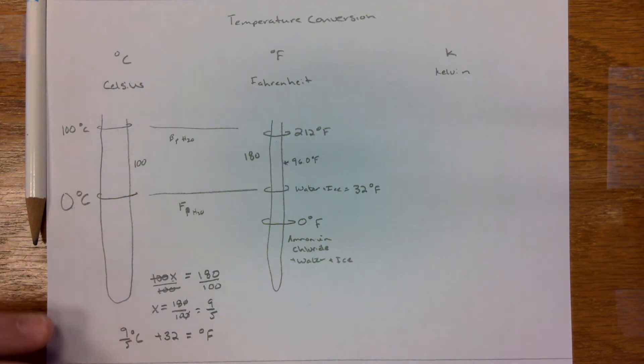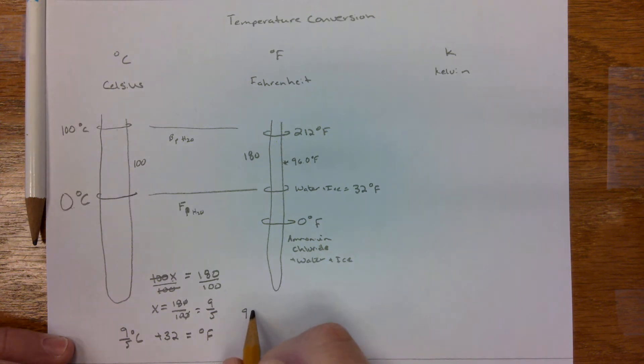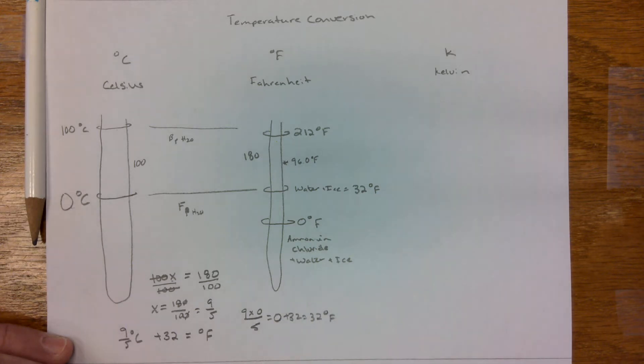Let's try that. 9 times 0 divided by 5, well that's going to be 0, plus 32 equals 32 degrees Fahrenheit. So the math checks.